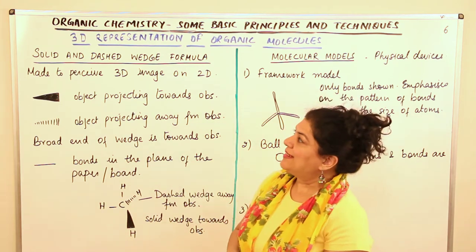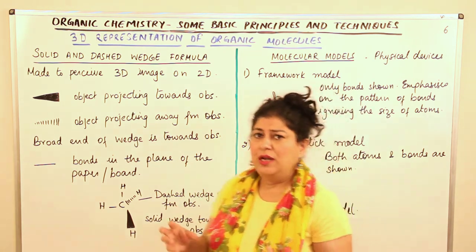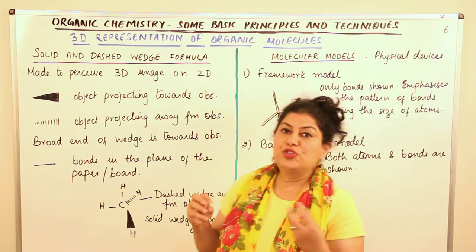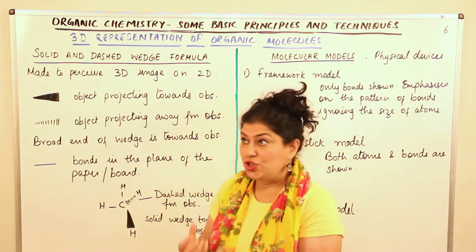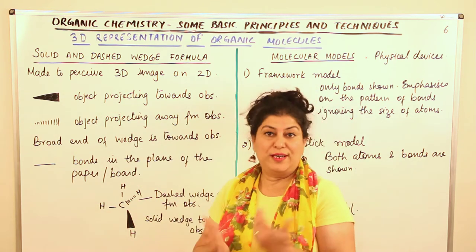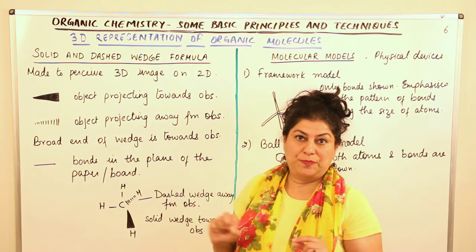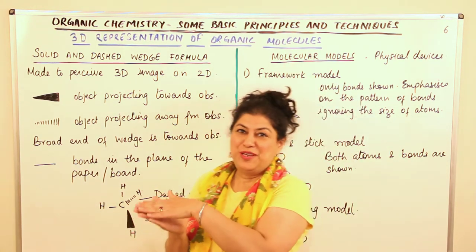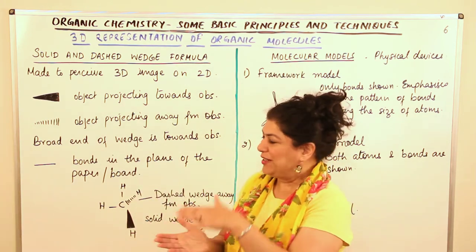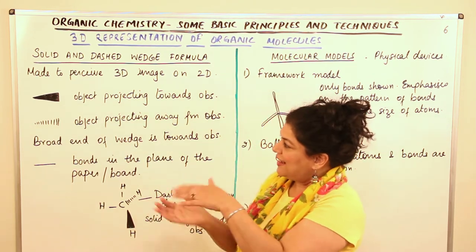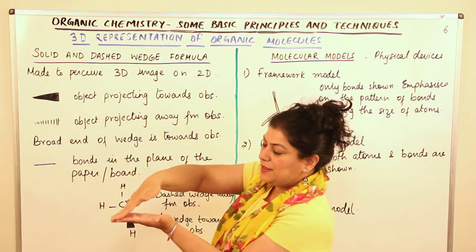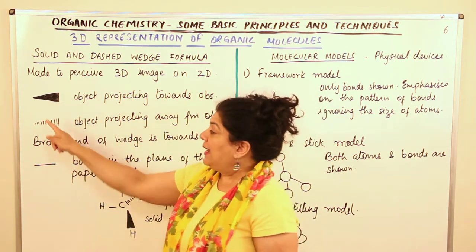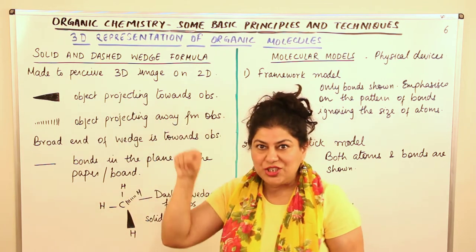We are going to take the simplest example — methane. How would you represent it on paper showing its three dimensions? It was decided that we make wedges. A wedge is tapered at one end and wider at the other. Two types of wedges were created: one was a solid, dark-colored wedge, and the other was a dashed wedge made using dashes.